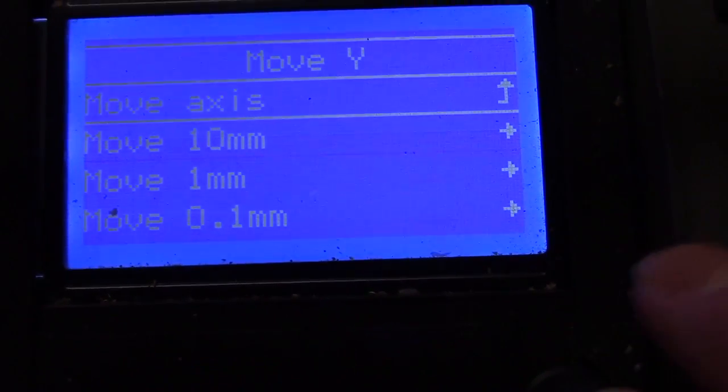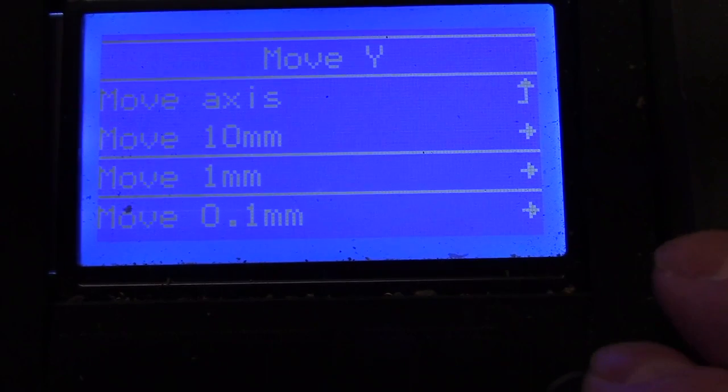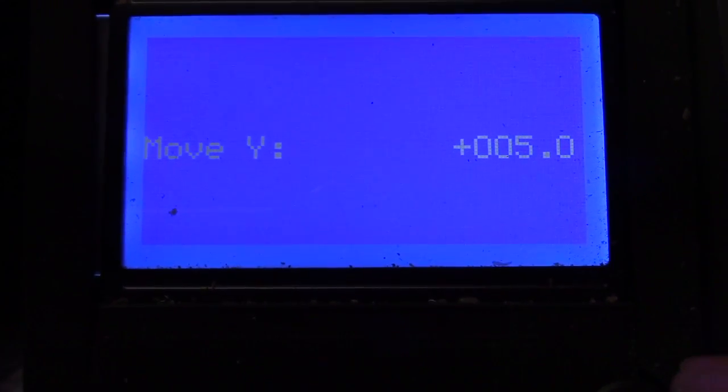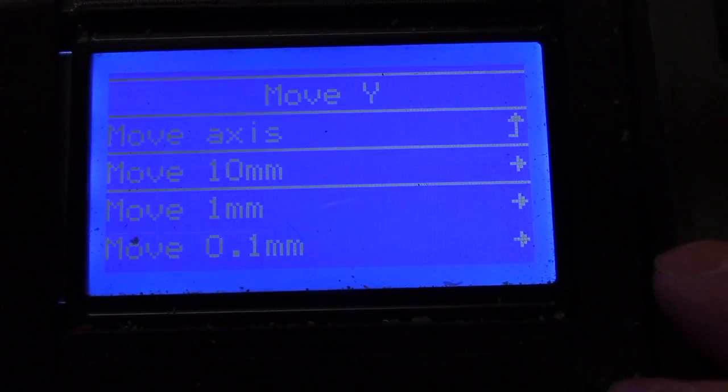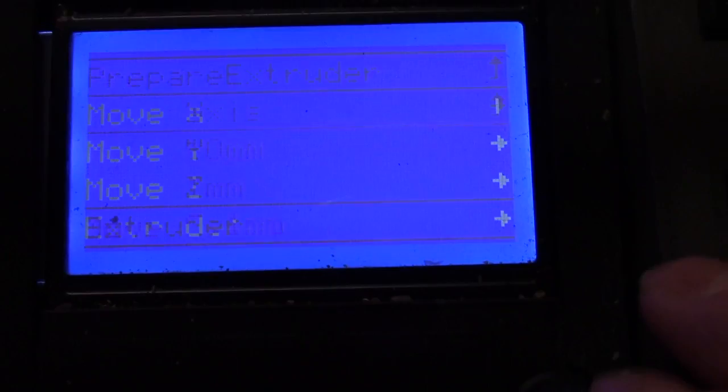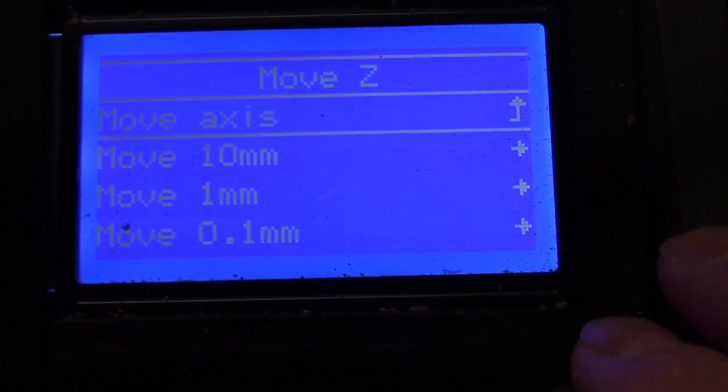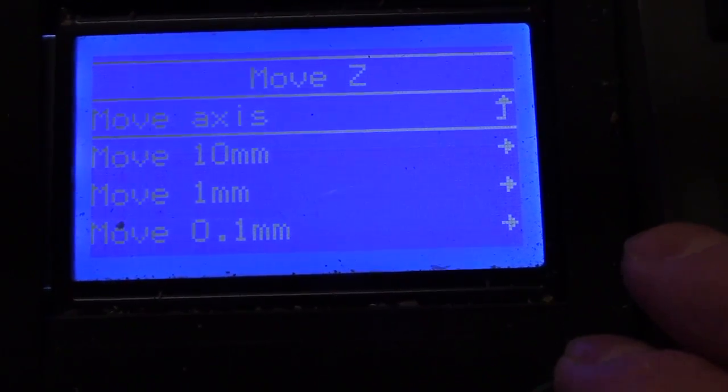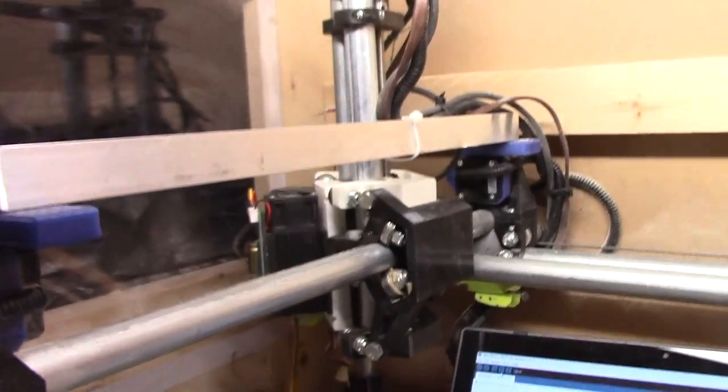And then let's go back to Move Axis to move Y. 10 millimeter one, so I can actually see it. Let's go to the 10 millimeter one here on Y. Oh yeah, that works. All right, so now let's go back and we're going to do Z, not Extruder, Z.